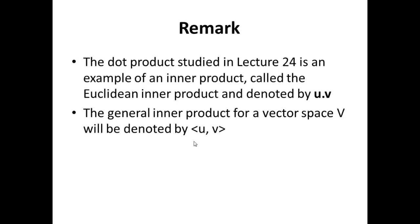Let's start off by observing a few things with respect to inner products. The first is that the dot product, which we studied in Lecture 24, is actually an inner product. We call that a Euclidean inner product, denoted U dot V. In this lecture we are introducing the general inner product for a vector space, which is denoted by the function ⟨U, V⟩. So this is a function definition.